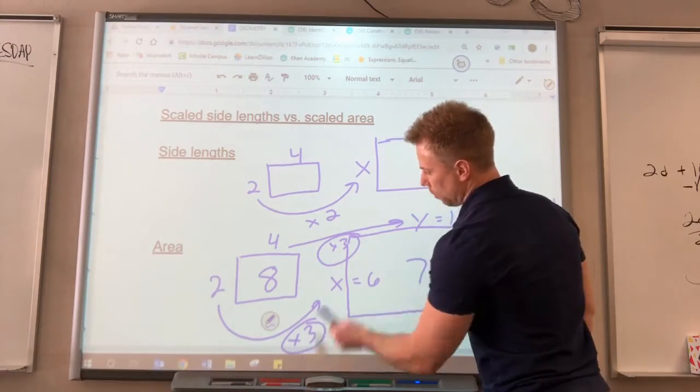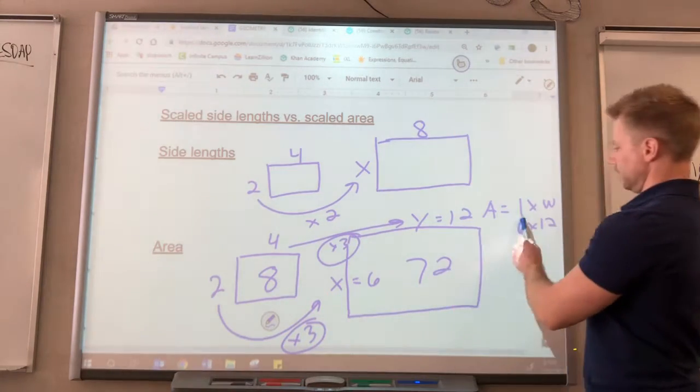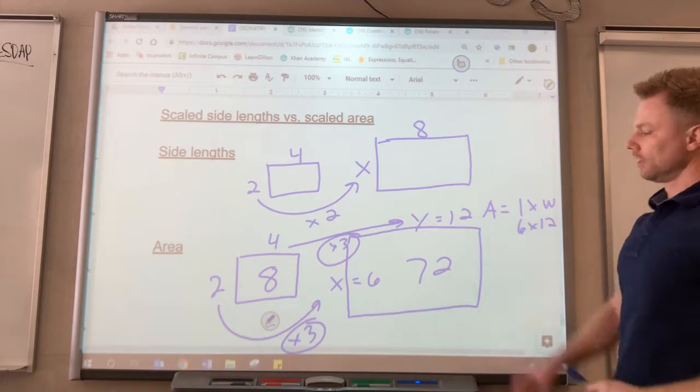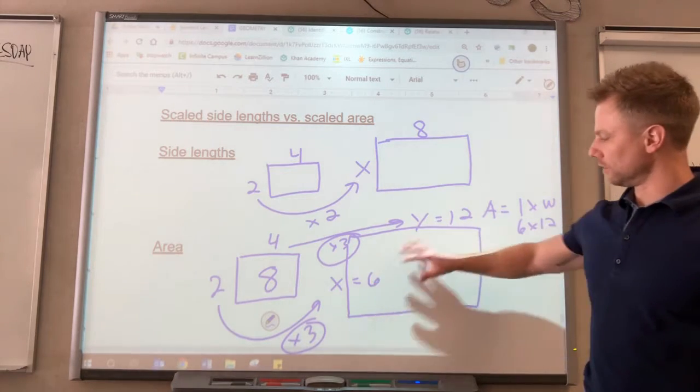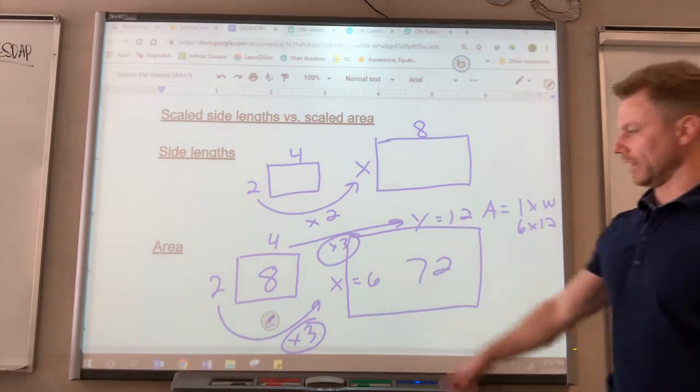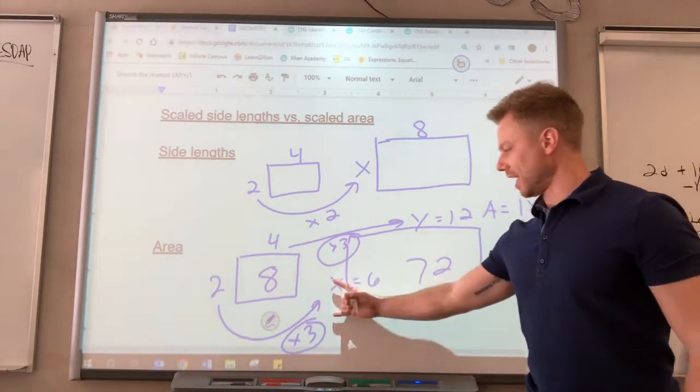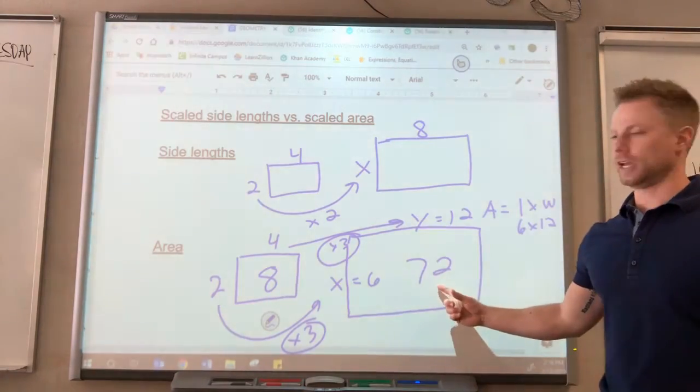Since we multiplied by 3 not once but twice, once for the length and once for the width, to get the new length and width to find the area, we have to multiply the area times 9 to get the scaled area.